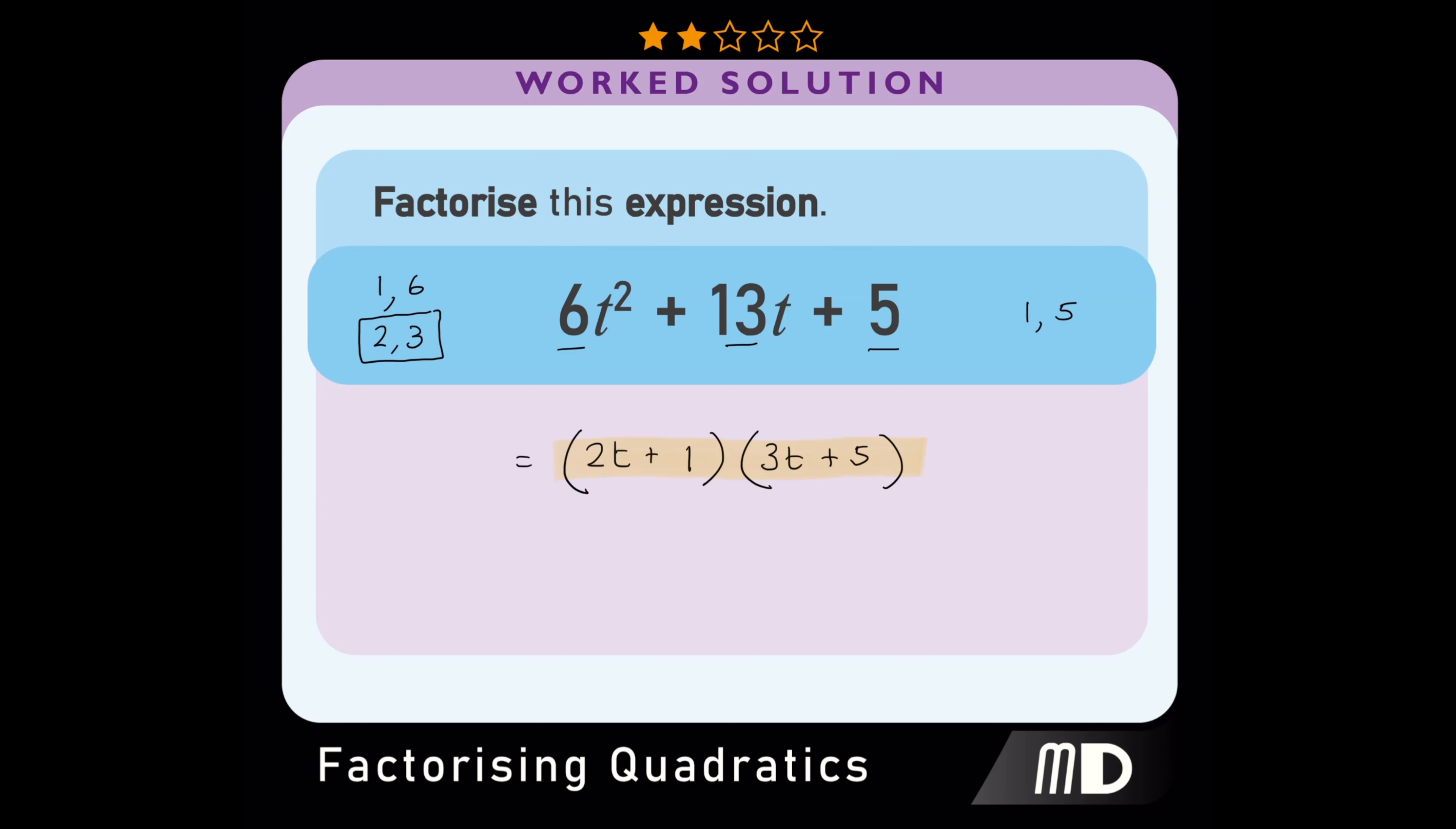We can expand these brackets to check that we get the expression we started with. So the answer to our question is 2t plus 1, all multiplied by 3t plus 5.